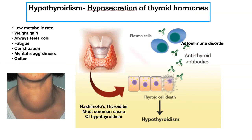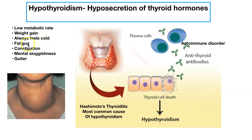The opposite of hyperthyroidism is hypothyroidism — a hyposecretion of thyroid hormones. The symptoms are basically the opposite: low metabolic rate, weight gain, always feeling cold because your metabolism is so slow, fatigue, constipation, mental sluggishness. That brain fog never clears up, and you can develop a goiter.